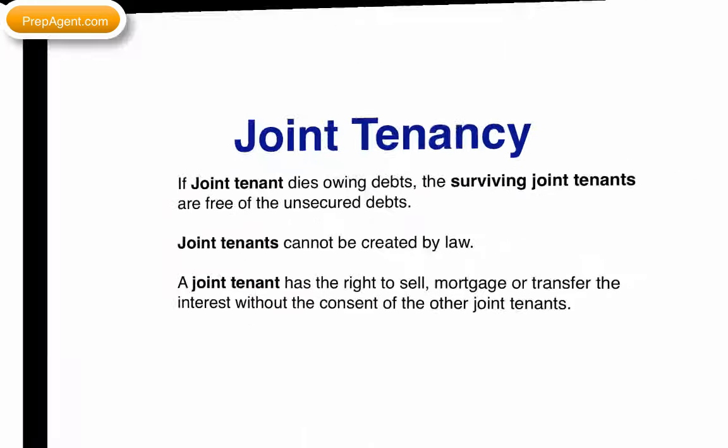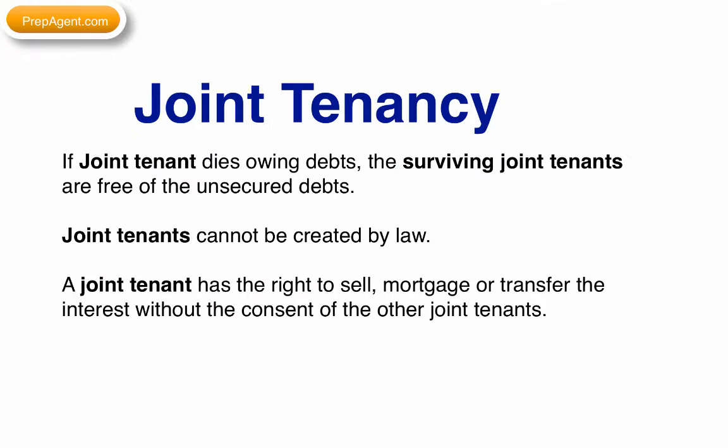If a joint tenant dies owing debts, the surviving joint tenants are free of those unsecured debts. Joint tenancy cannot be created by law; therefore, the two parties who wish to be joint tenants must make it clear in the conveyance documents. A joint tenant has the right to sell, mortgage, or transfer the interest without the other joint tenants.